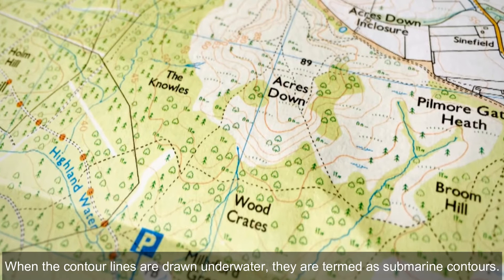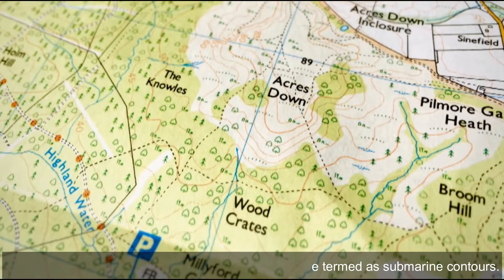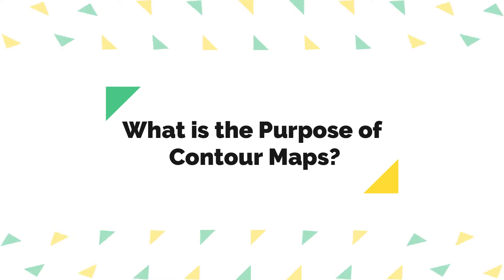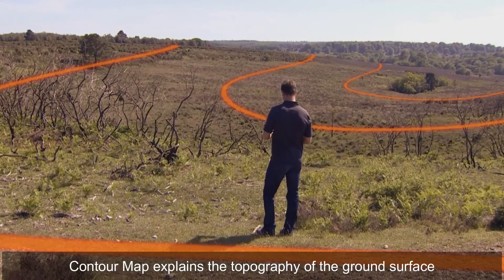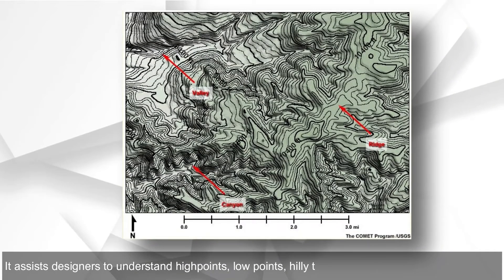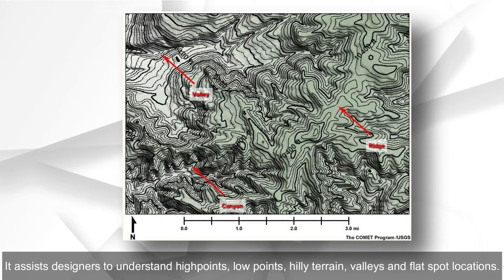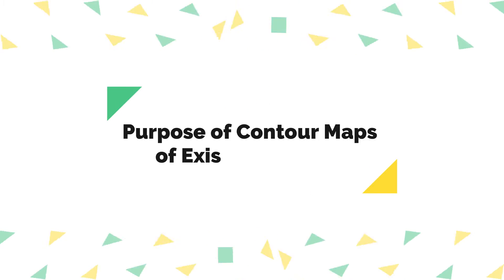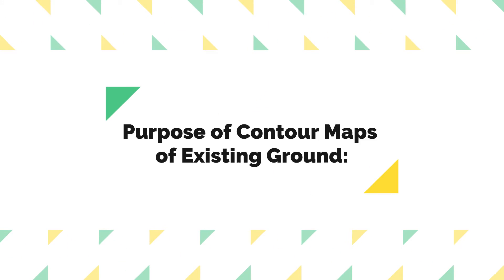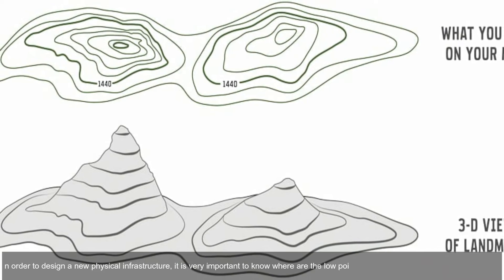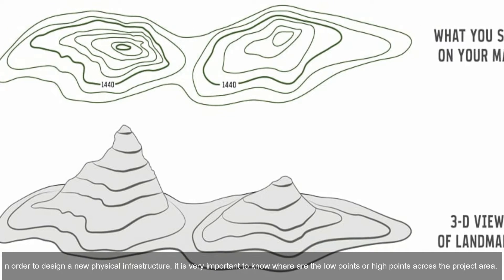When contour lines are drawn underwater, they are termed submarine contours. The purpose of a contour map is to explain the topography of the ground surface. It assists designers to understand high points, low points, hilly terrain, valleys, and flat spot locations.